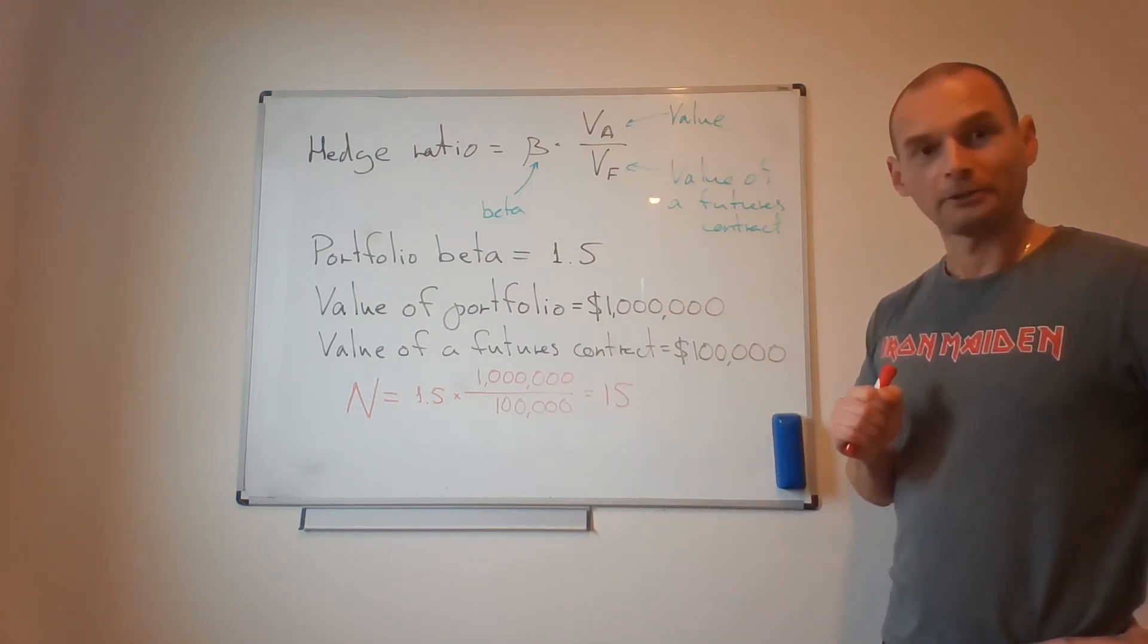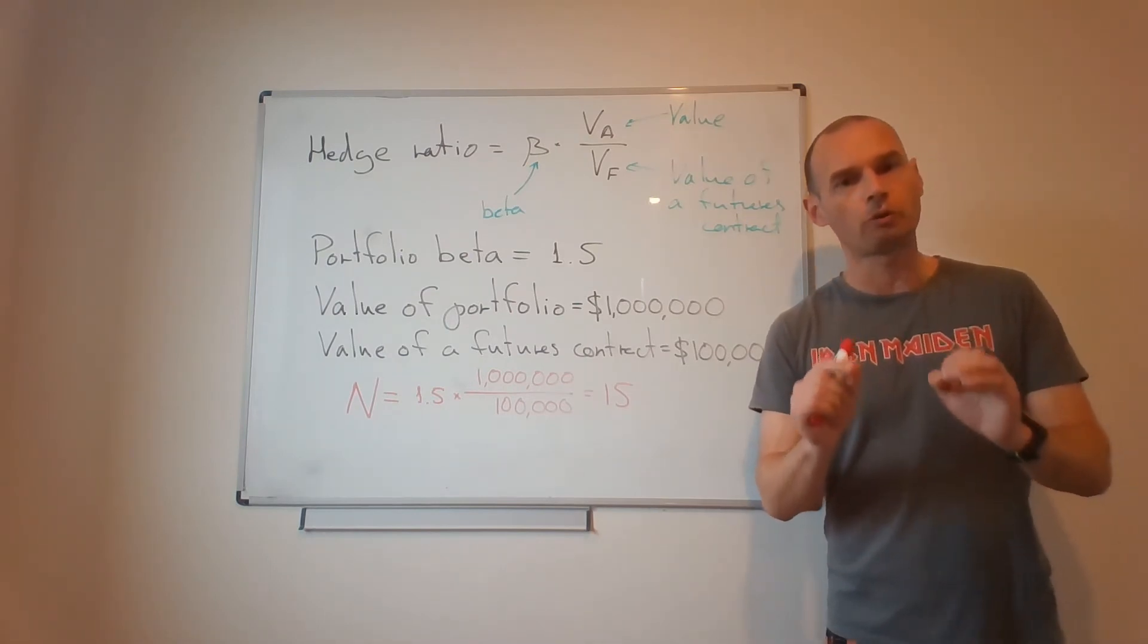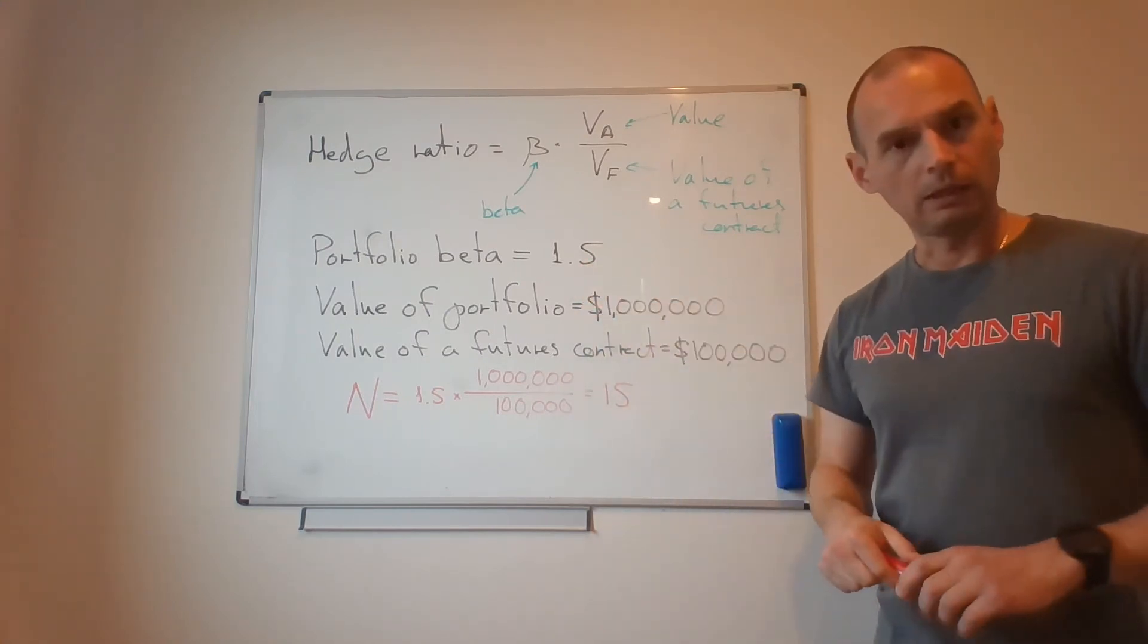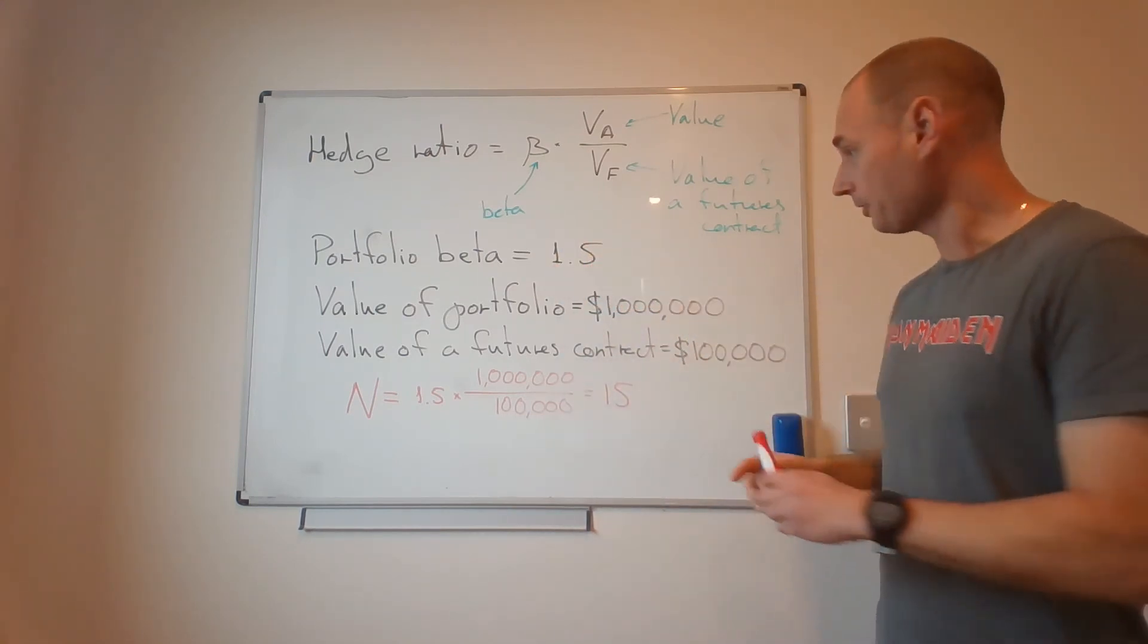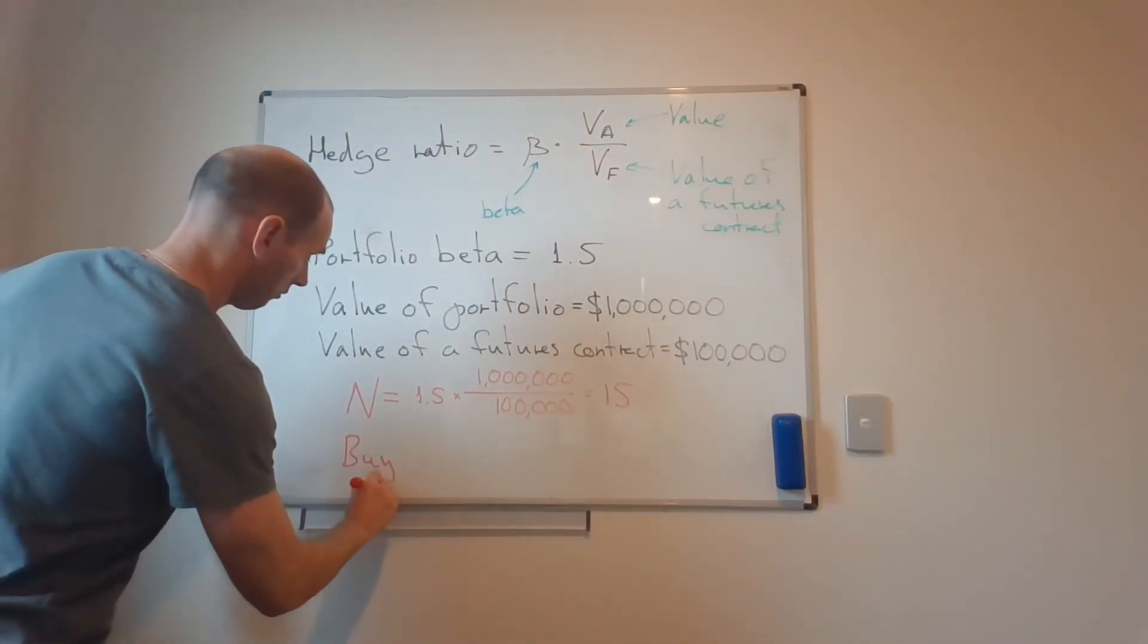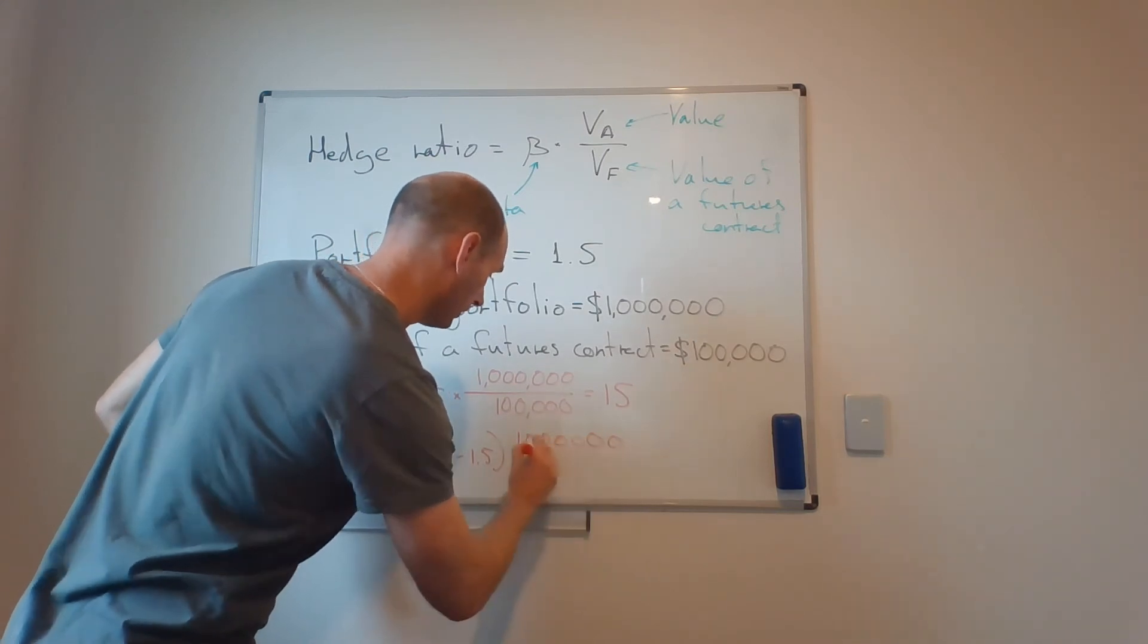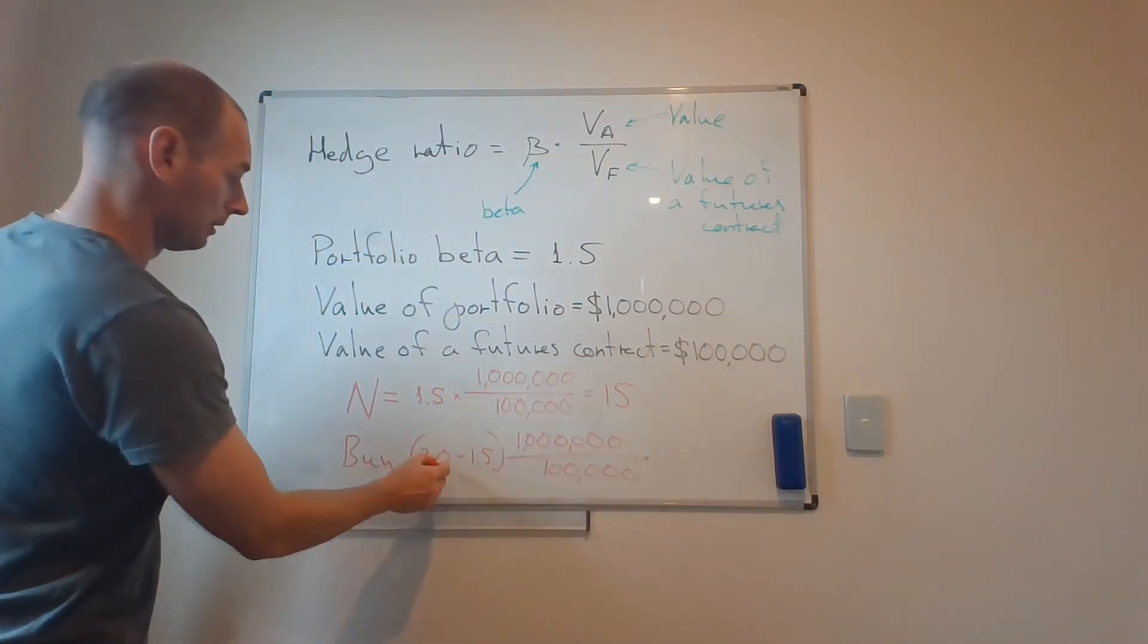Now what if for some reason I believe that the market is going to do great, and I want to actually increase my beta here from 1.5 to 2? In that case I will actually need to buy contracts - 1, 2, 3, 4, 5, 6. So that will be 0.5. I will need to buy 5 contracts.